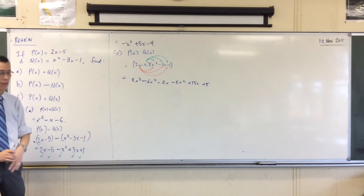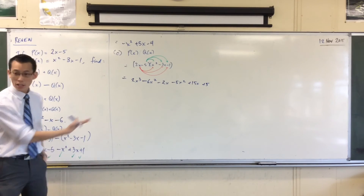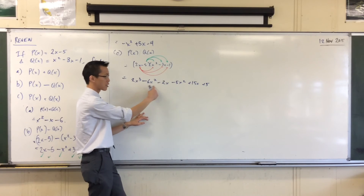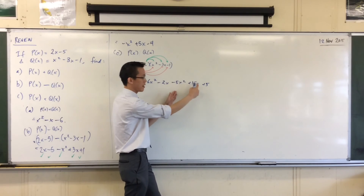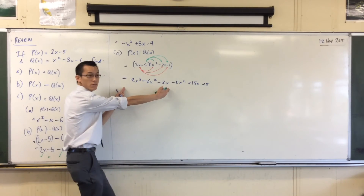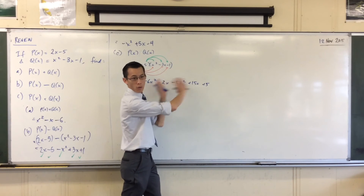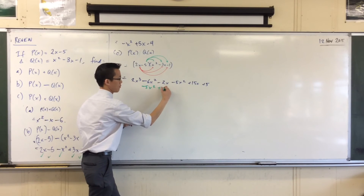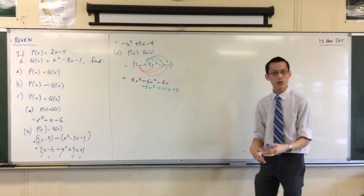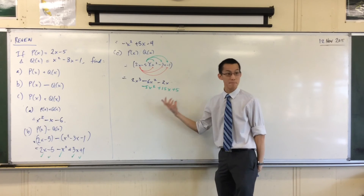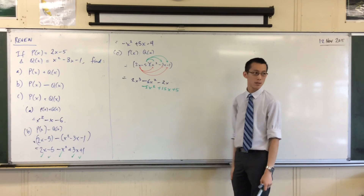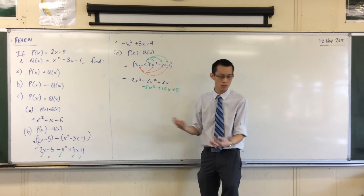I'm going to tell you something not everyone does, but you may find it helpful. When I collect like terms, instead of writing the second group of three all the way along the same line, some people write them staggered underneath. Do you see that my first three go X cubed, X squared, X to the 1? And my next three go X squared, X to the 1, X to the 0. Writing them staggered automatically matches up like terms, so you can see there are all my X squareds together, and all my X's together, and then only one X cubed and one constant.